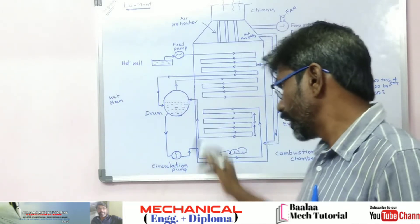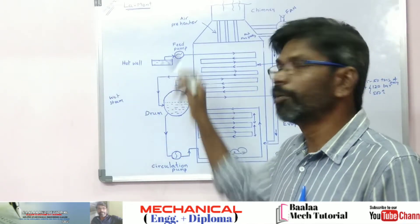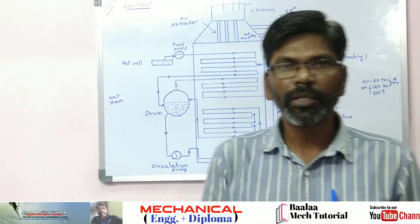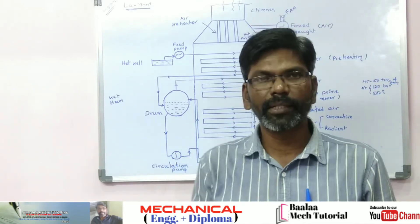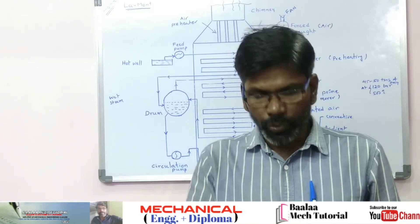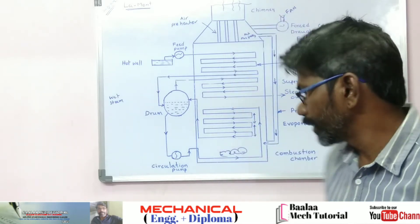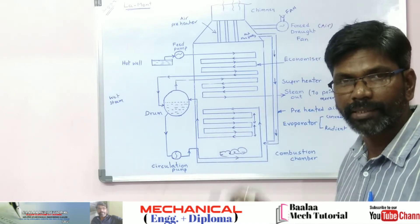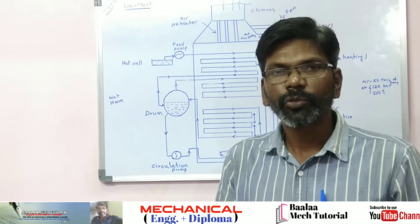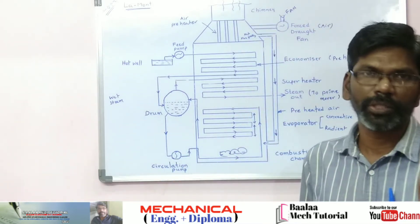Second one is the circulation pump. The circulation pump is already used for circulation. Its main function is to create high pressure. How is high pressure created? The circulation pump creates it.